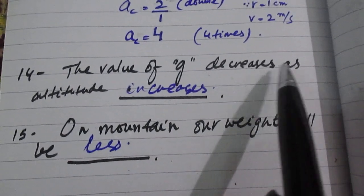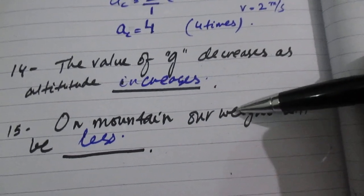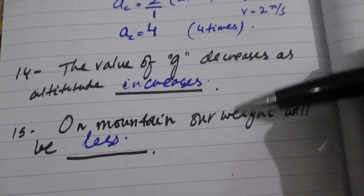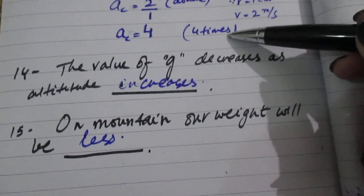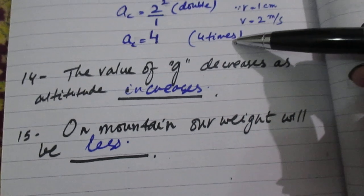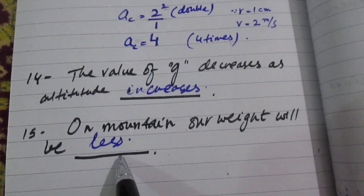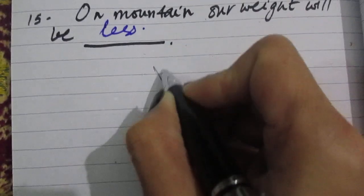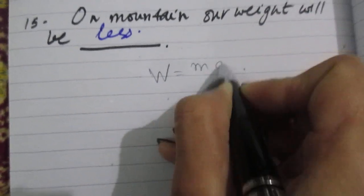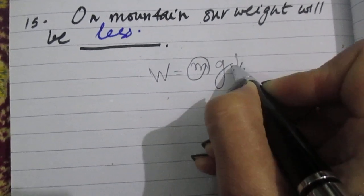The value of g decreases as altitude increases. When you go to height, your gravitational constant is reduced. So when you are on a mountain, your weight is less. Why is it less? Because you know weight is mg. Your mass of body will remain, but your weight will be less.